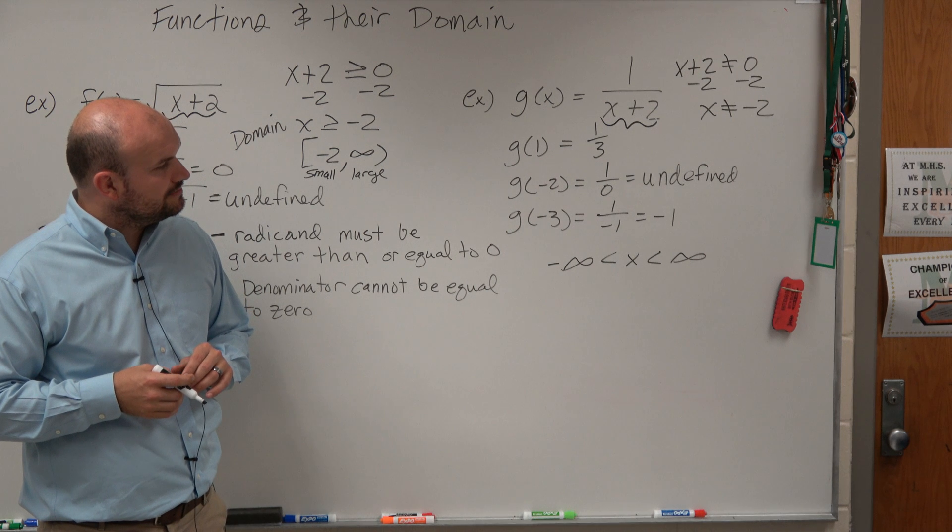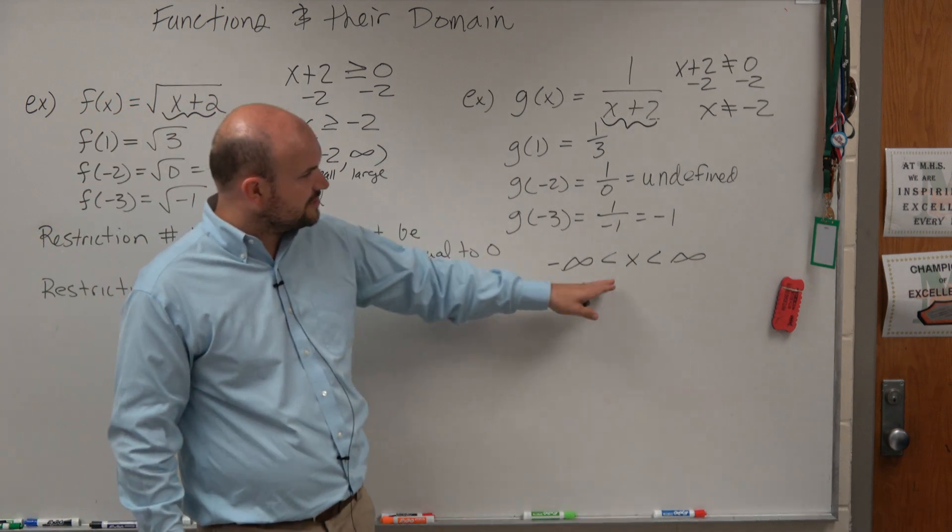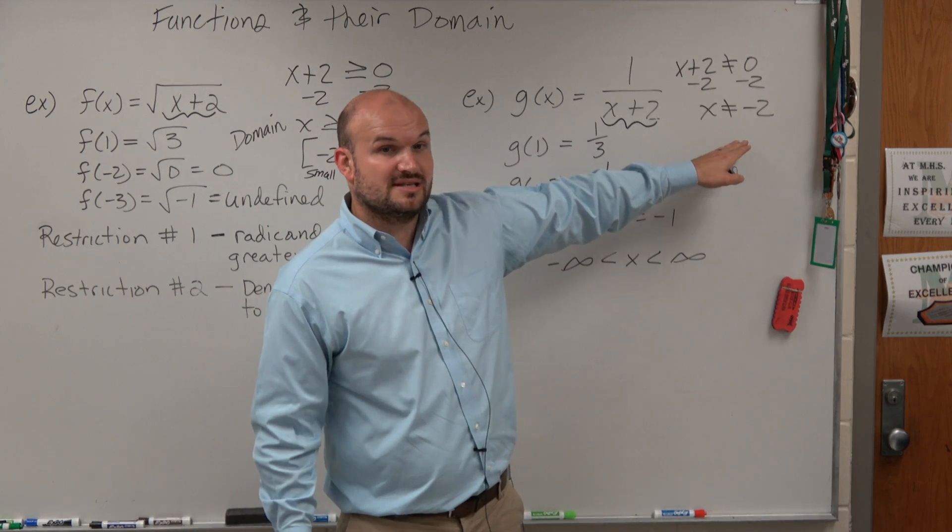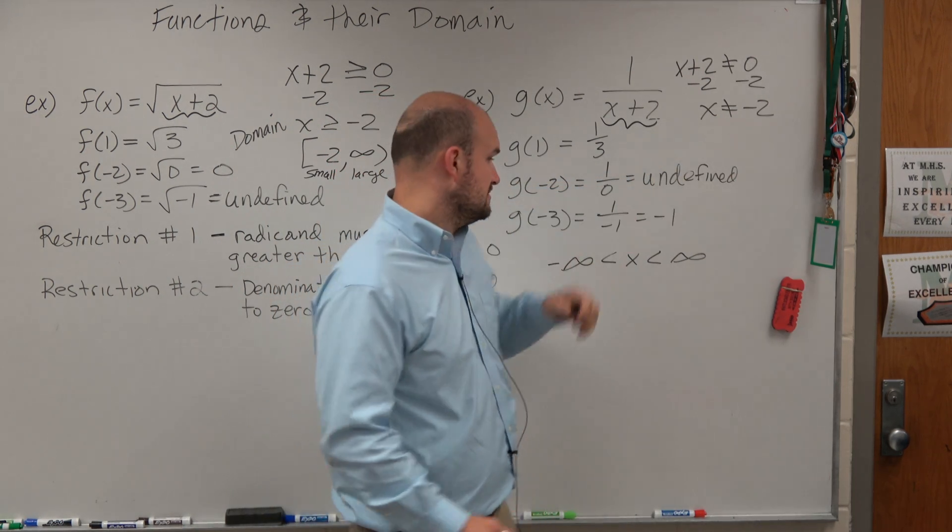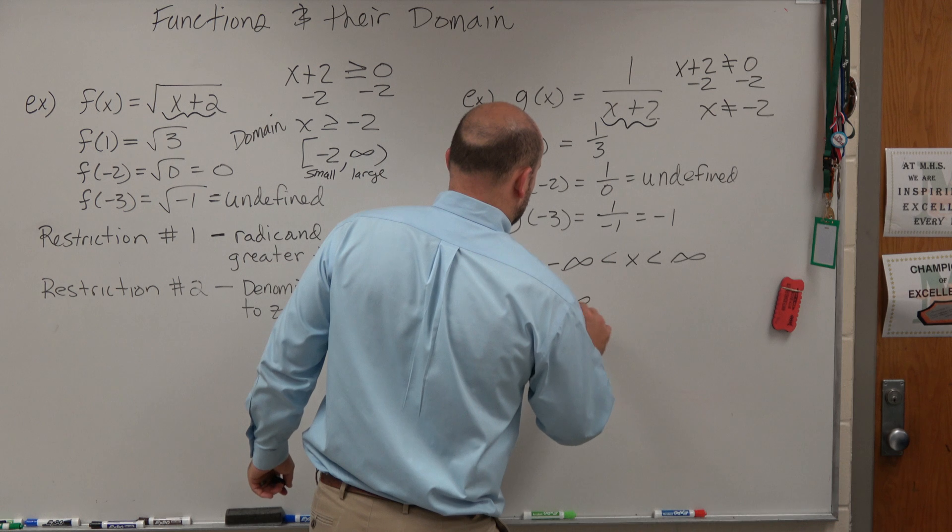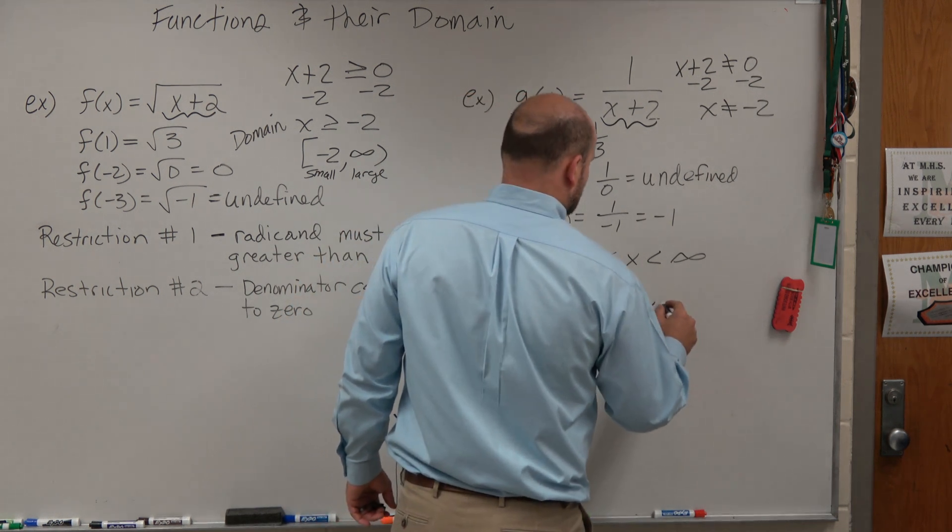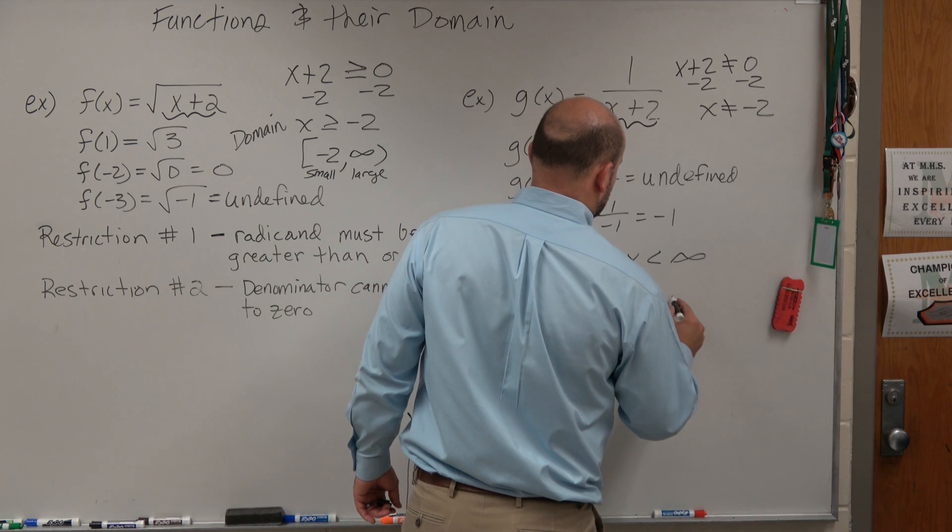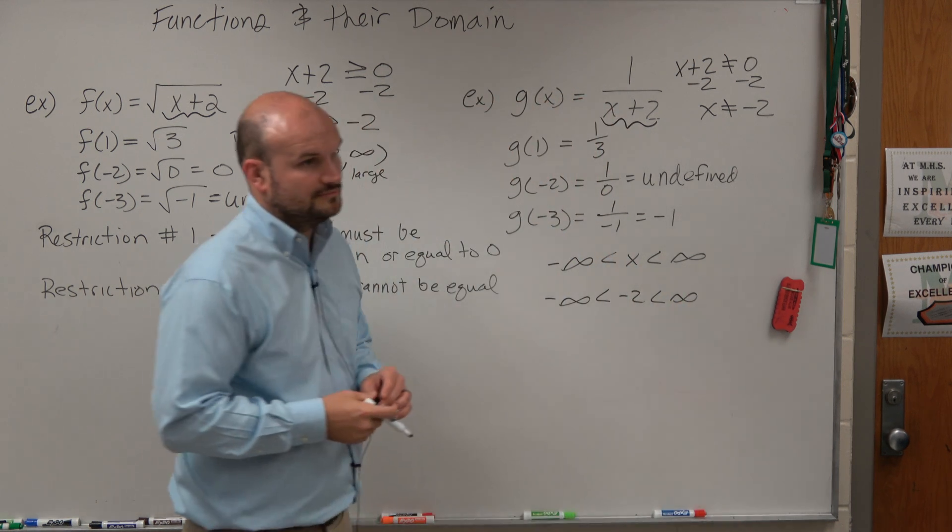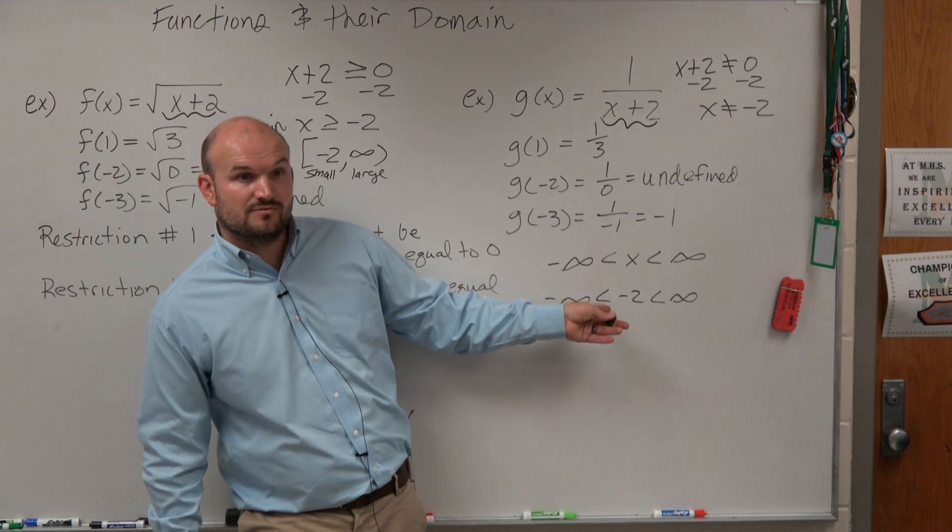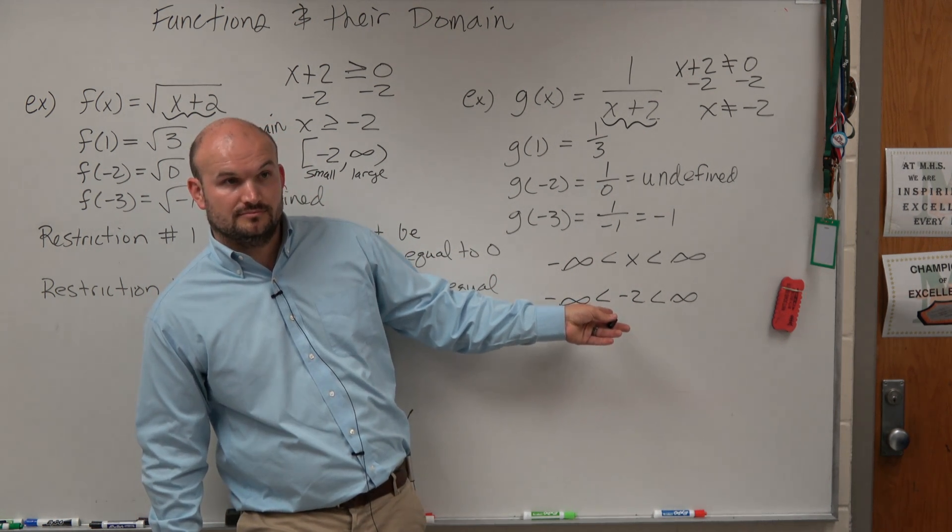So now let's go and think, let's go and kind of look into where we're going to be. It's going to be all numbers except for negative 2. So we can say negative infinity is less than negative 2, which is less than infinity. Because negative 2 is not included. Because those represent non-inclusion. Okay?